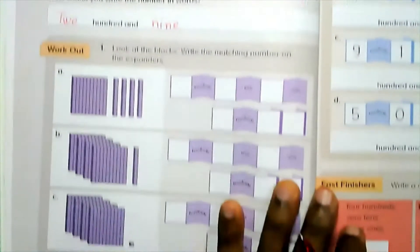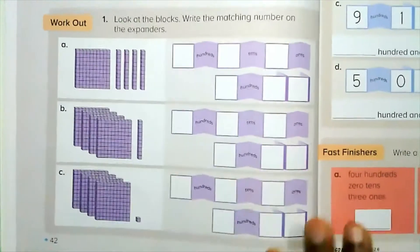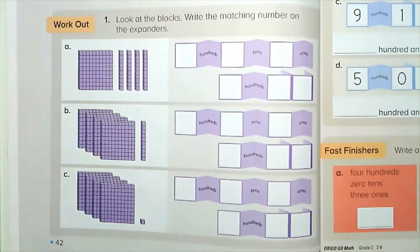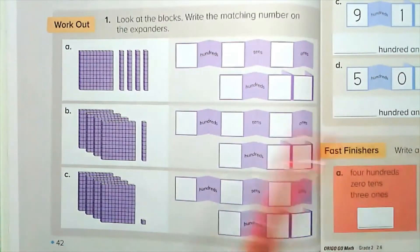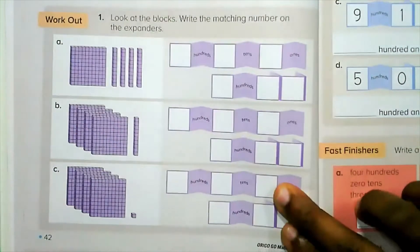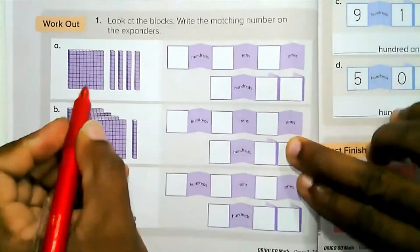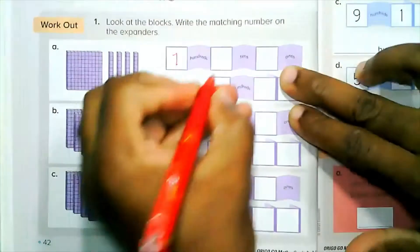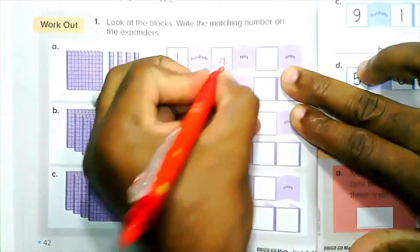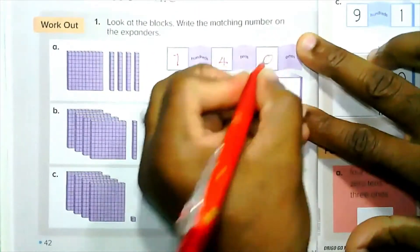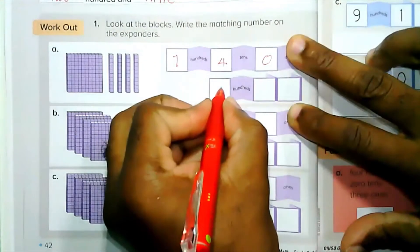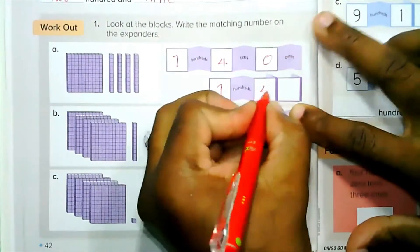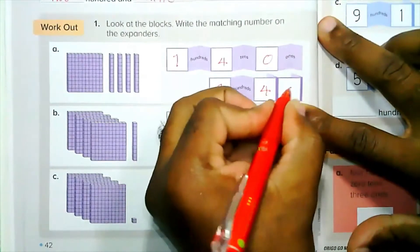Now onto the workout. Look at the blocks and write the matching number on the expanders. We have one hundred, four tens, zero ones — that gives us one hundred and forty.